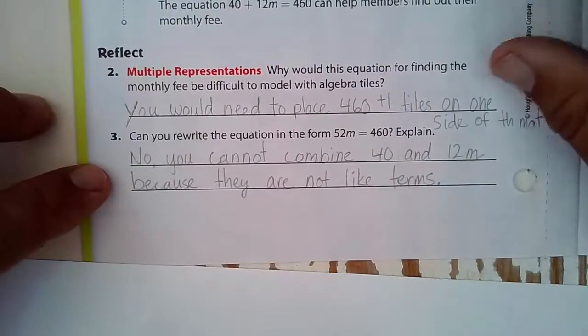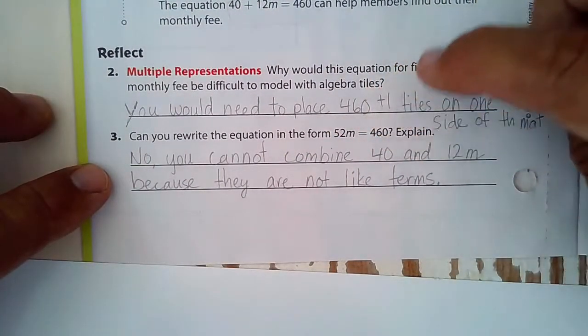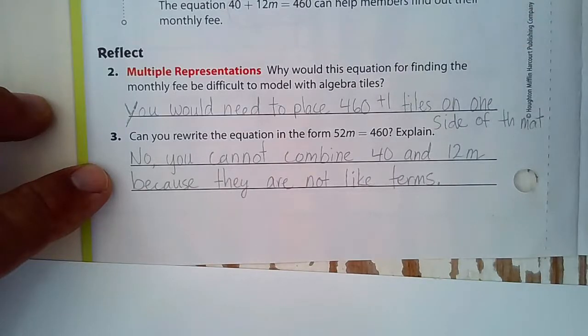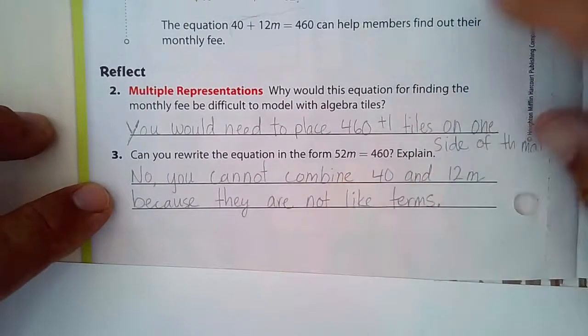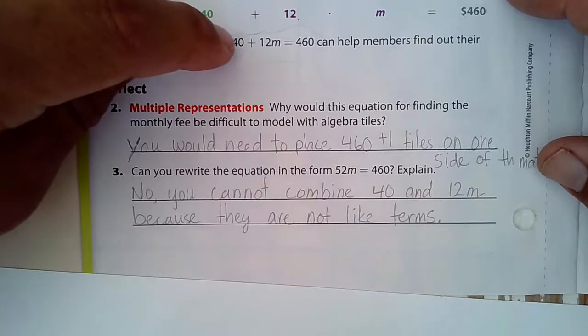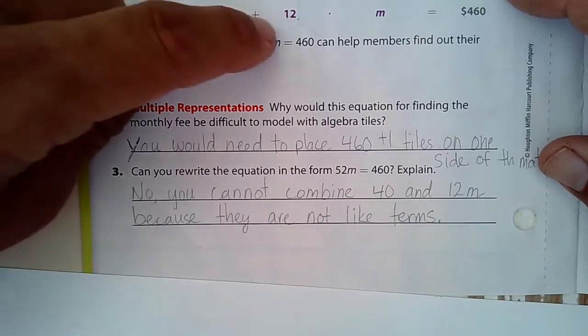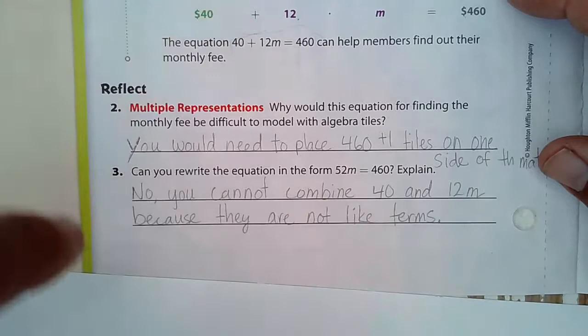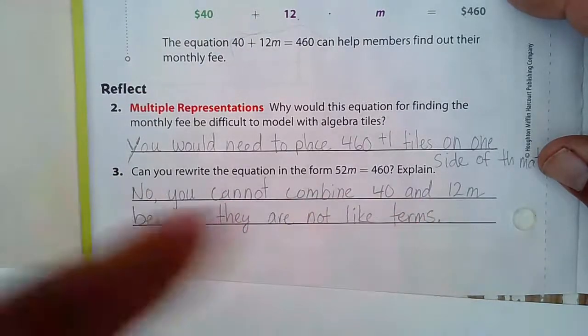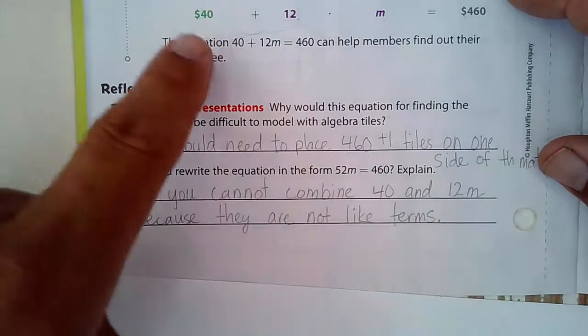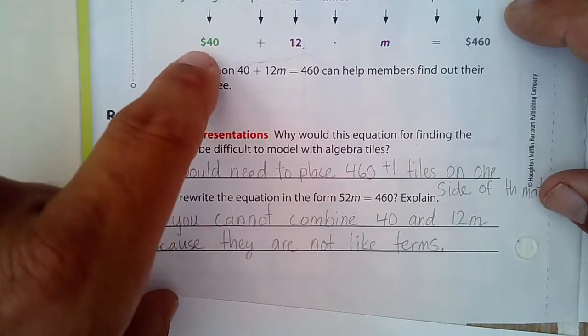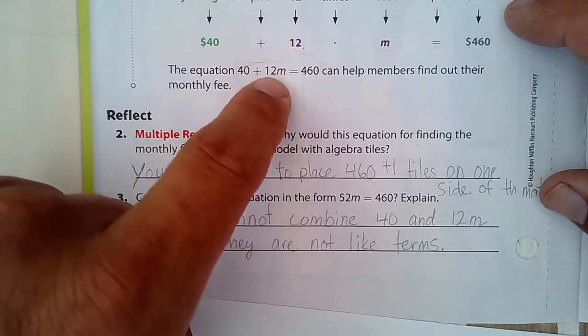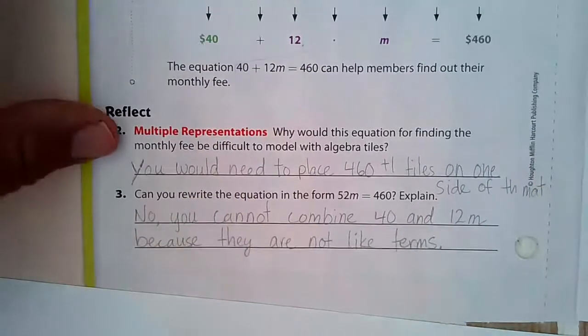Can you rewrite the equation in the form 52M equals 460? So, where do we get the 52? I believe what they're saying is, could you add 40 and 12 together to get 52M? And no, you cannot combine 40 and 12M, because they are not like terms. That would have to be 40M and 12M, or that would just have to be 40 and 12 without the M. So that's how that works.